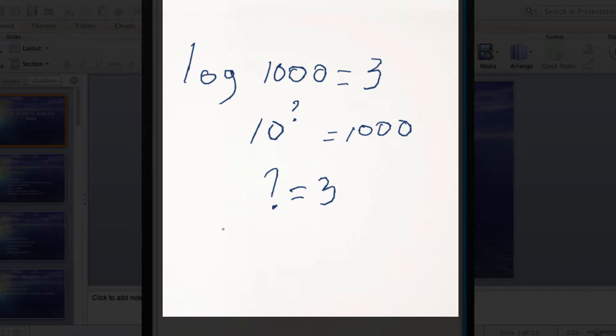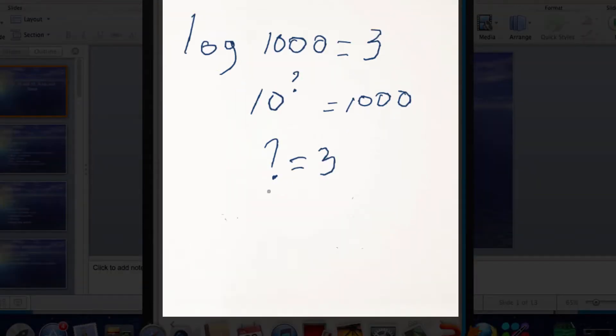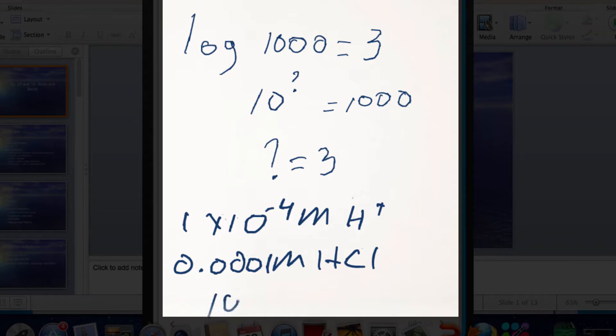Let's say you have a solution that is 1×10^-4 molar in hydrogen ion. That's 0.0001 molar hydrochloric acid. If we wanted to know what the pH is, we would take the log of that. What is the log of 1×10^-4? It's 10 to what power equals 10^-4. The answer is obviously negative four. The log of 10^-4 is negative four. When we take the pH of something, we're taking the negative of the log.